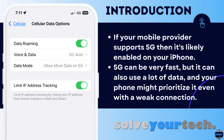Your iPhone can connect to many types of cellular networks, one of which is 5G. At the time of its release, the 5G network was the fastest one available for iPhone 13 owners. If your mobile provider supports 5G, then it's likely enabled on your iPhone. 5G can be very fast, but it can also use a lot of data, and your phone might prioritize it even with a weak connection. So if you've decided that you would like to disable the 5G network on your iPhone, let's jump into the steps to follow.